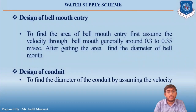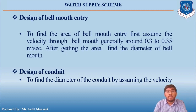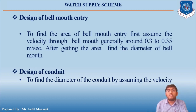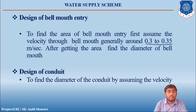Next is to find the bell mouth diameter. To find the area of the bell mouth entry, you first assume the velocity through the bell mouth, which is usually 0.3 to 0.35 meter per second. After getting the area you can find out the diameter. Finally, find out the diameter of the conduit by assuming the velocity of flow inside the conduit.